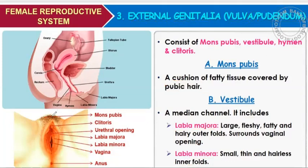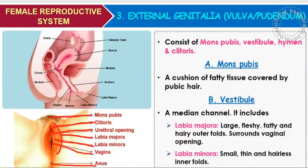This part is the mons pubis, this part is the clitoris, then comes the urethral opening. The outer part here is the labia majora, and this one is the labia minora. Labia majora, compared to minora, is a thick and hairy cushion. The hairs are present to trap any insect, bacterial infection, or foreign substance so they cannot enter — for the protection of the vagina. Then comes the vagina, and then the last opening is the anus.